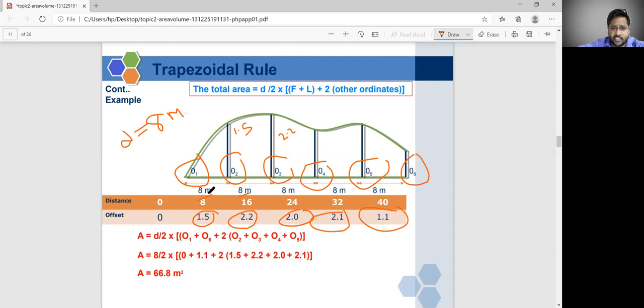I am using eight by two. All together gives you your area. The total area is 66.8 meter square.